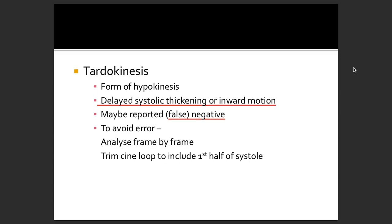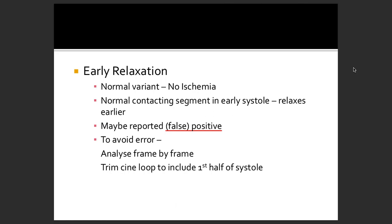Early relaxation is mostly a normal variant — it's a normal contracting segment in early systole that tends to relax early. It can sometimes be reported as false positive. To avoid this error, analyze frame by frame. Frame-by-frame analysis of acquired images is very important. You should also trim the cine loop to include the first half of the systole.